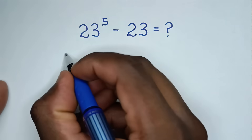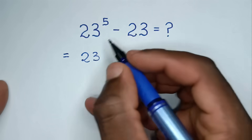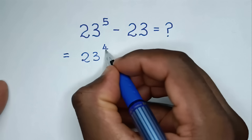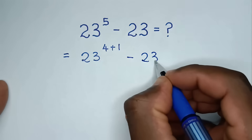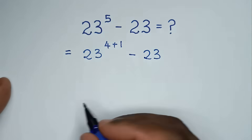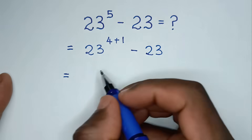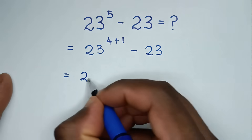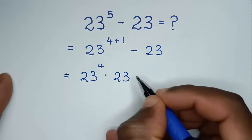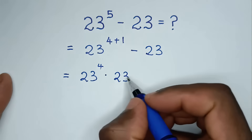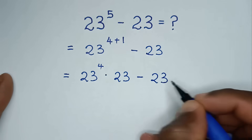So it will be equal to 23 power 5, which is the same as power 4 plus 1, then minus 23. Then in the next step it will be equal to 23 power 4 plus 1, which is the same as 23 power 4 times 23, then minus 23.